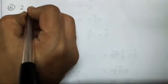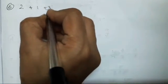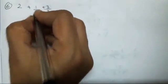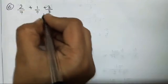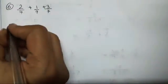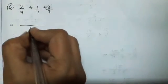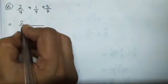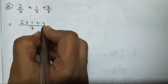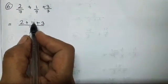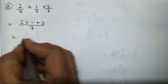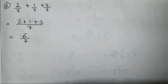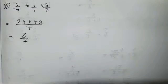The sixth sum has 3 fractions, and all three have the denominator 7. So we can write 7 only once and then add 2 plus 1 plus 3. 2 plus 1 is 3, and 3 plus 3 is going to be 6 upon 7. This cannot be reduced or divided, so we will keep it as it is.